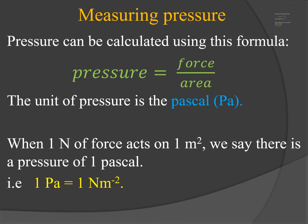Now we are going to discuss how pressure is measured. Pressure can be calculated using this formula: pressure is equal to force over area. The unit of pressure is Pascal, and its symbol is Pa.